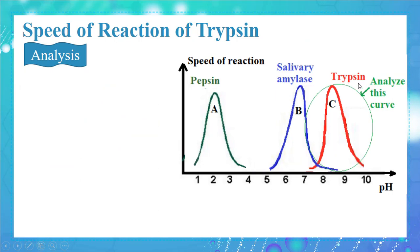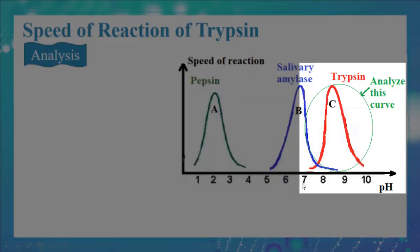Now analyze the curve related to trypsin. At pH equal to 7, the speed of reaction of trypsin was null. As the pH increased to 8.5, the speed increased until it reached the maximum. As the pH increased to 10, the speed decreased until it reached null again. The speed of trypsin was maximum at pH equal to 8.5, which corresponds to a basic medium.